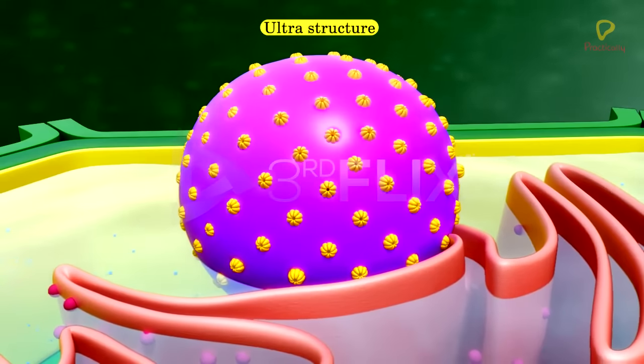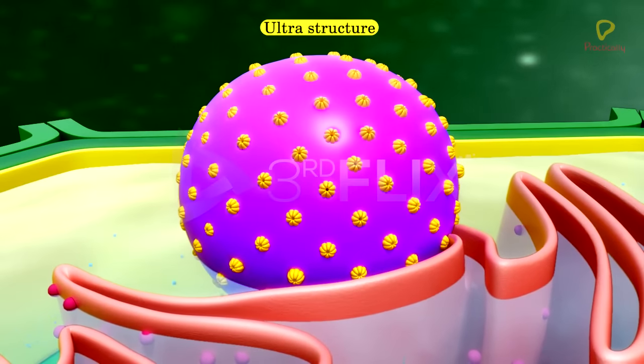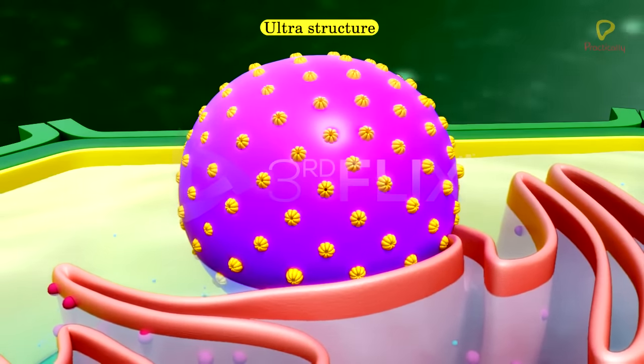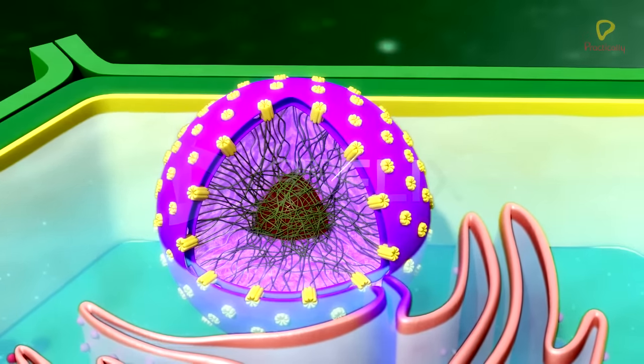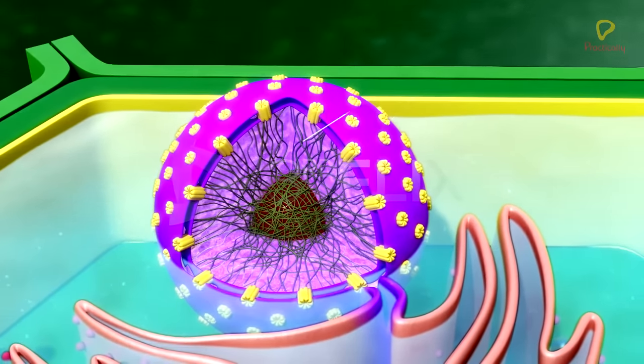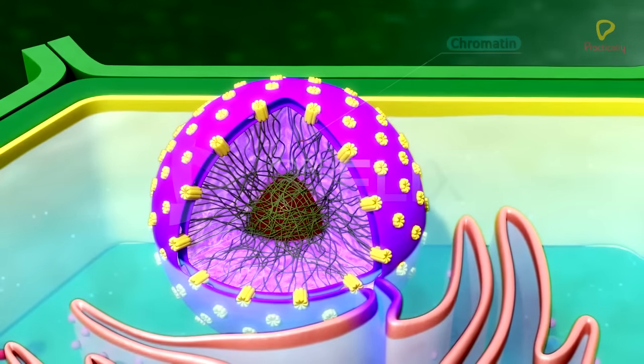During interphase of cell cycle, the nucleus does not divide. Interphase nucleus has nuclear envelope, nucleoplasm, chromatin and nucleolus.